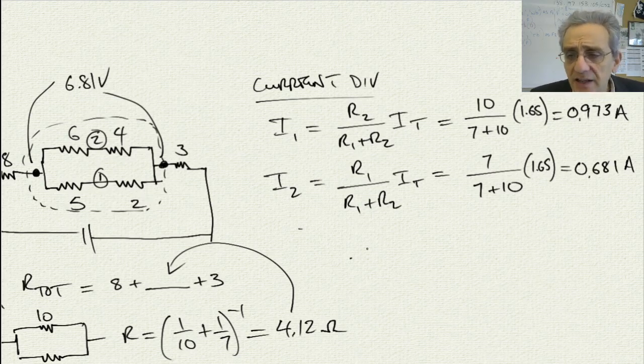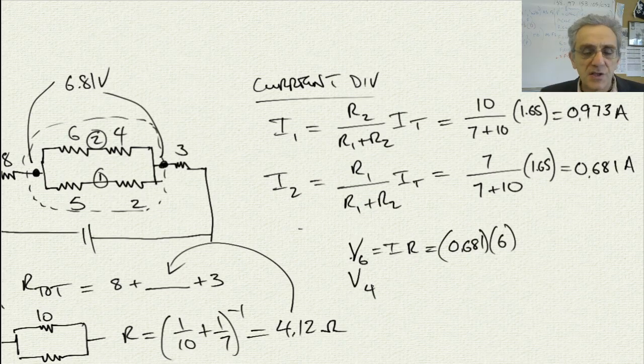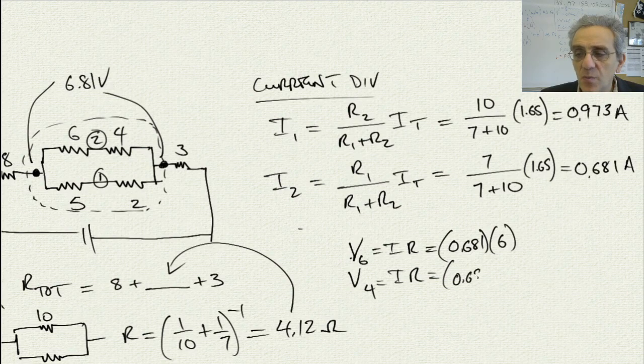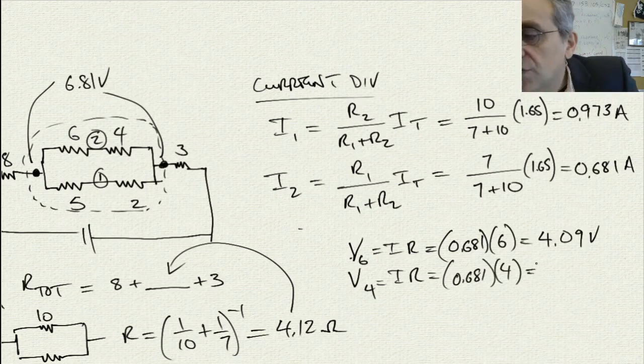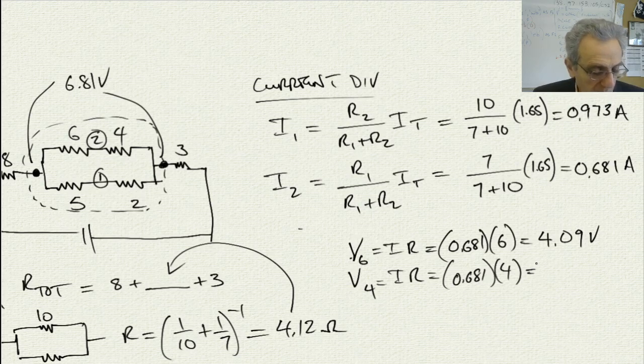Now, I can easily calculate the voltages across the six. That's IR. Therefore, it's going to be I2, 0.681, times the six. V4 here is also going to equal IR. It's going to be the same I, so that's going to be 0.681 times a four. So that's going to give me 4.09 volts for the six-ohm resistor. And if I calculate it for the four, I'm going to go 0.68 times four, and that's going to give me 2.72 volts for the four-ohm resistor.